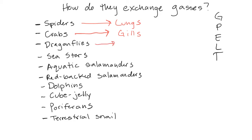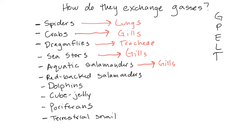Dragonflies — trachea. Sea stars — gills. Aquatic salamanders — gills, and they have external gills. If you've ever seen little salamanders in a pond, they'll have these things sticking out of their neck — those are the gills.